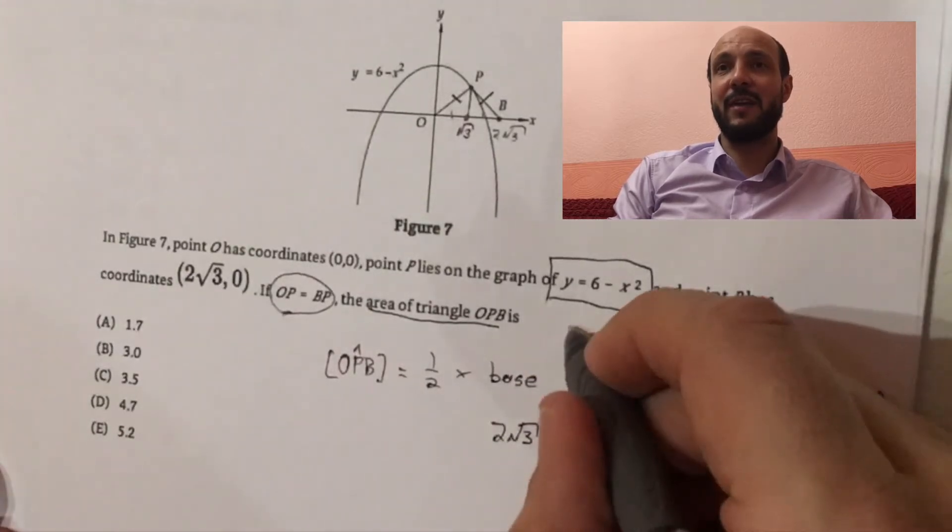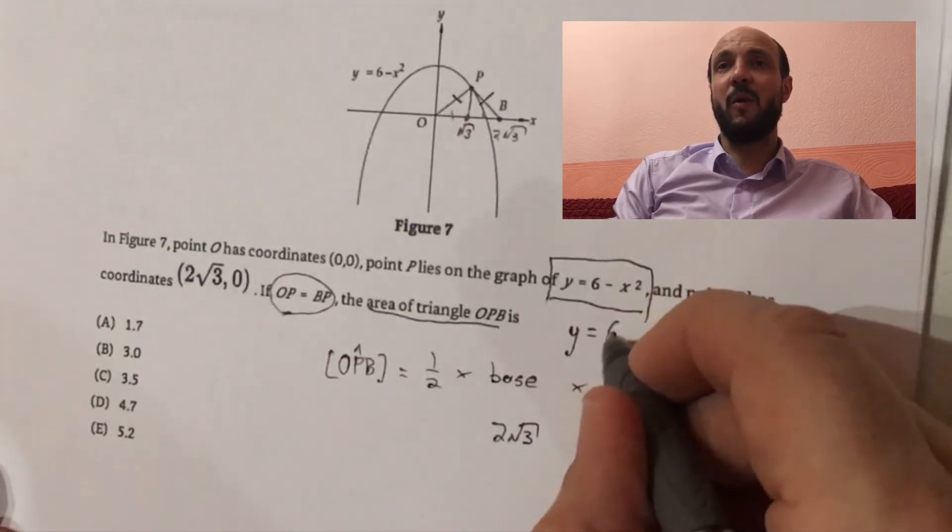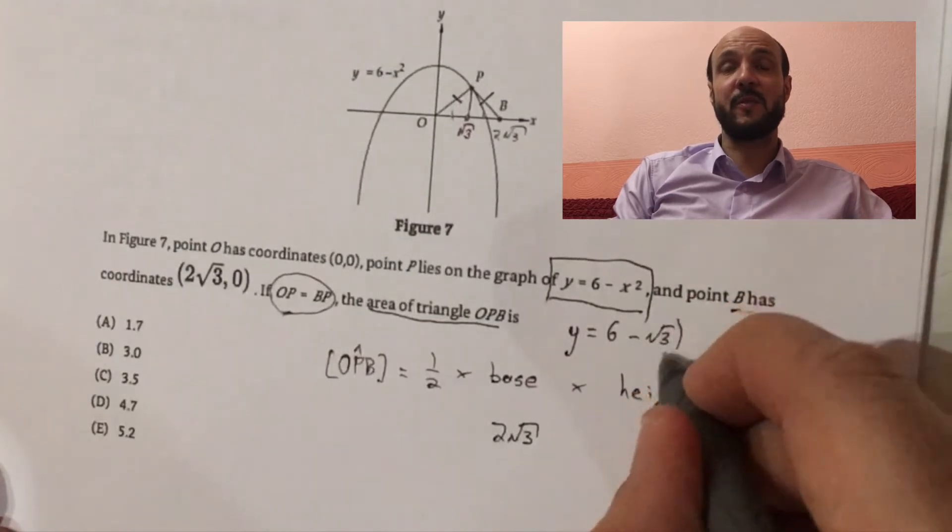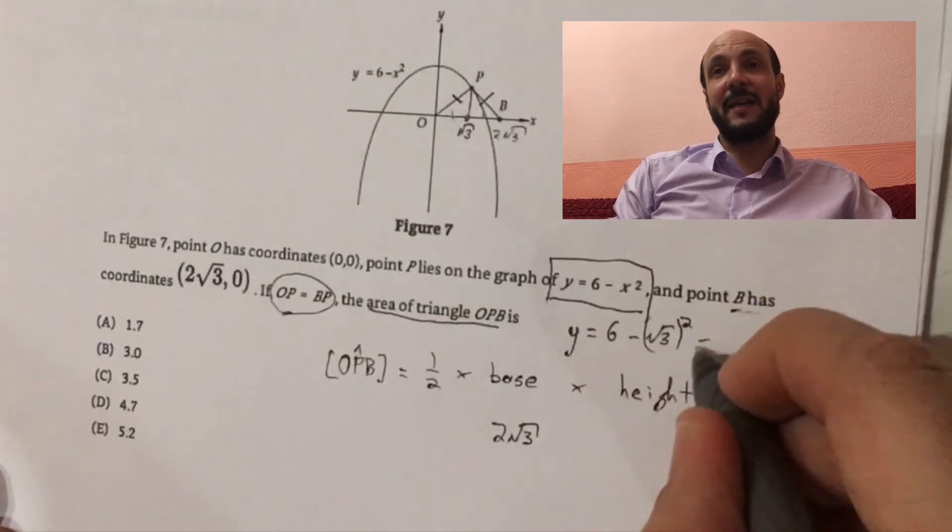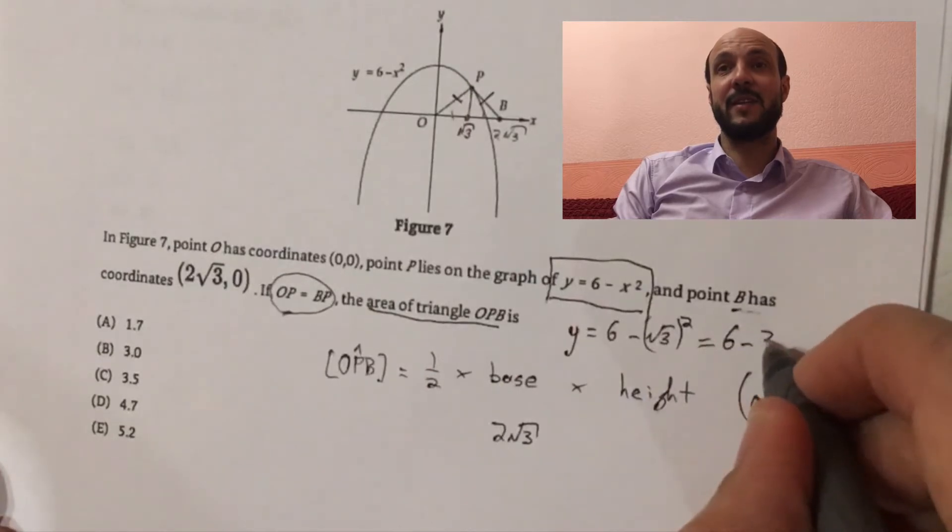If we put that into our equation relating y and x, we see y is equal to 6 minus root 3 squared. So 6 minus root 3 squared is 6 minus 3, which is 3.